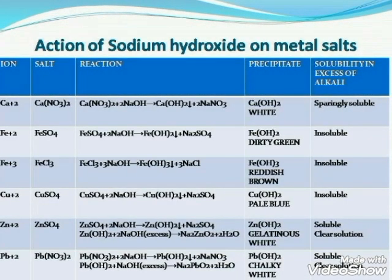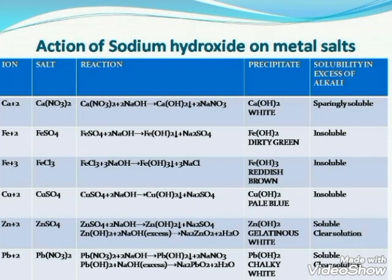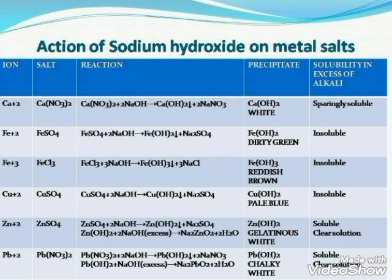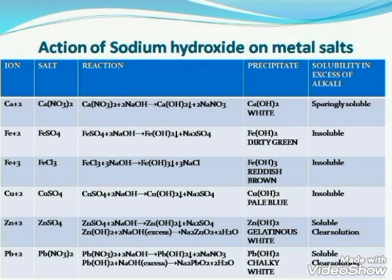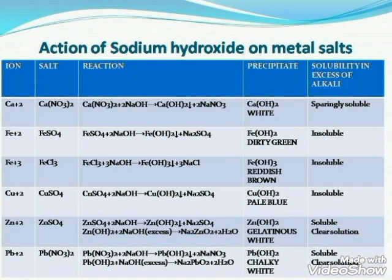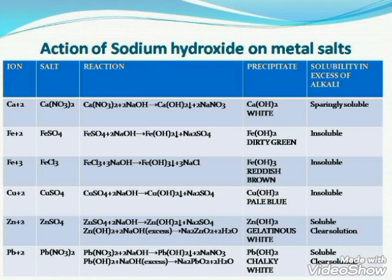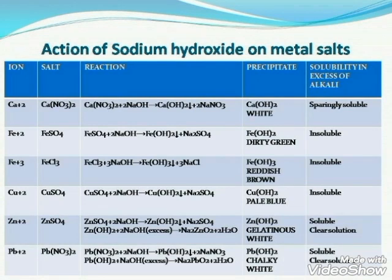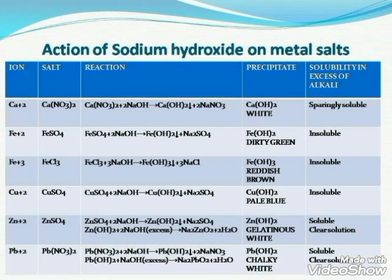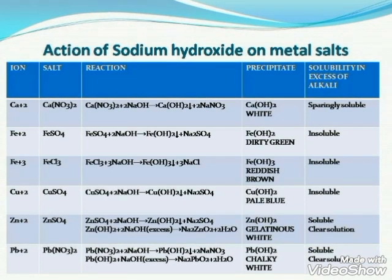Now let us see the action of sodium hydroxide on various metal salts. There is a table in which the first column shows the ion, the second the salt, the third the reaction for precipitate, and the last one tells about solubility in excess of alkali. Always remember, in analytical chemistry you have to do two tests — first using a limited amount of the reagent, sodium hydroxide or ammonium hydroxide, and then using excess of it — and show both observations. You can see the color of precipitates when salts react with sodium hydroxide: white, green, dirty green, reddish brown, and the solubility in the last column.